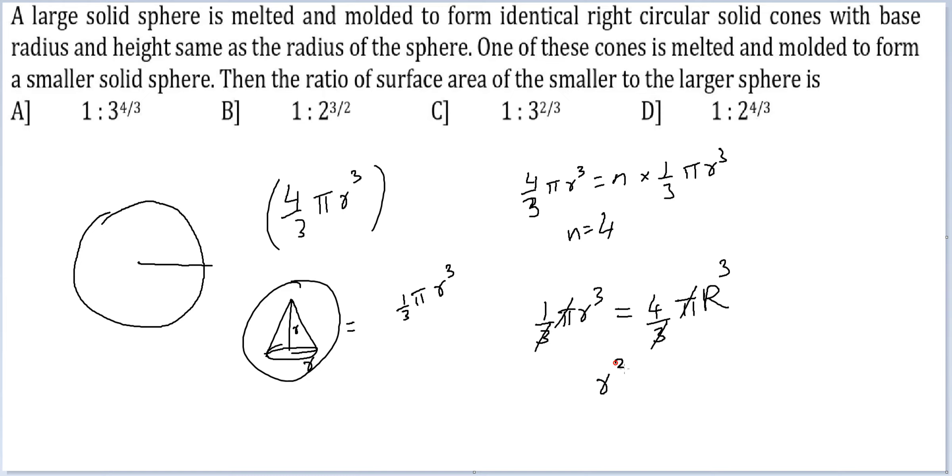So one fourth r cube is equal to capital R cube. Let's write this. The ratio of surface area of the smaller to the largest sphere is this is r. Let's write this. R would be equal to R by 2 raised to the power 2 by 3.